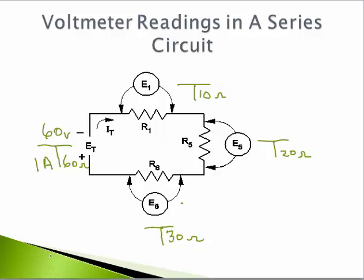Now in a series circuit, 1 amp as a total will also be 1 amp at every resistor. So I can go ahead and put 1 amp in each one of my T's for every resistor.